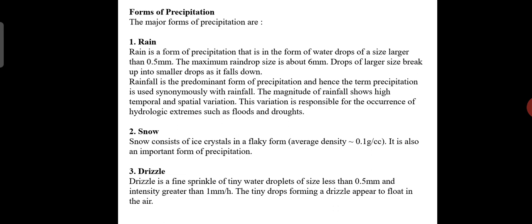Rainfall is the predominant form of precipitation, and hence the term precipitation is used synonymously with rainfall. The magnitude of rainfall shows high temporal and spatial variation. This variation is responsible for the occurrence of hydraulic extremes such as floods and droughts.